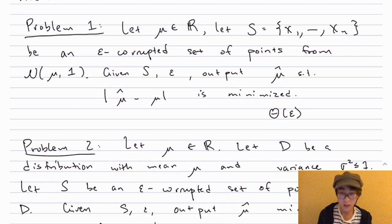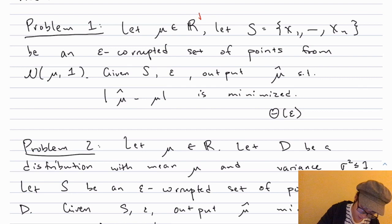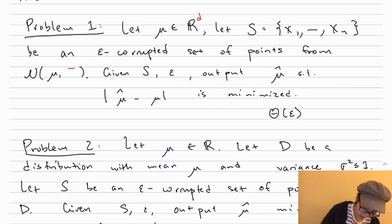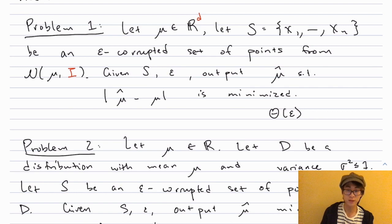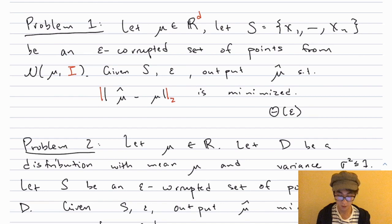What's the high-dimensional analog of this problem? Now instead of having an unknown mean which is a real number, we have an unknown mean vector living in ℝ^d. Again we are given an epsilon-corrupted set of samples, but now from a d-dimensional Gaussian with that mean. We need to specify a covariance matrix, and for now we take the identity so the Gaussian has variance one in every direction. The goal is to output some μ̂ close to μ, and the right norm turns out to be the L2 norm, since Gaussians are naturally L2 objects.